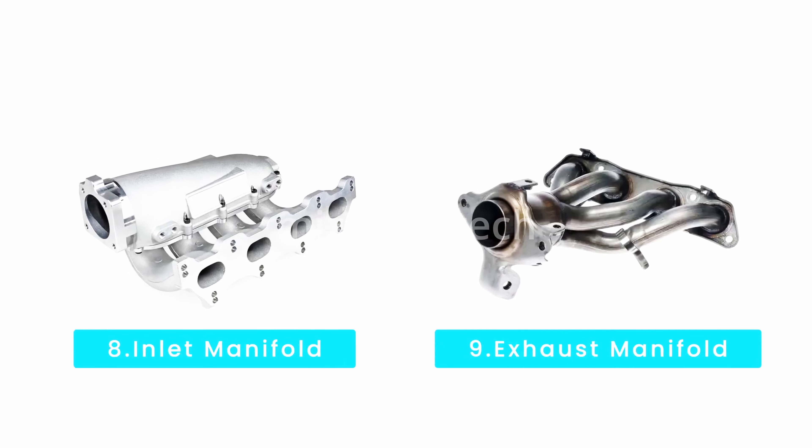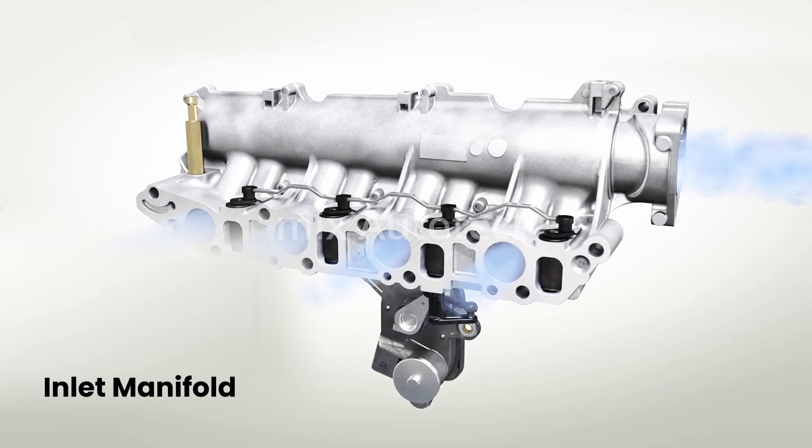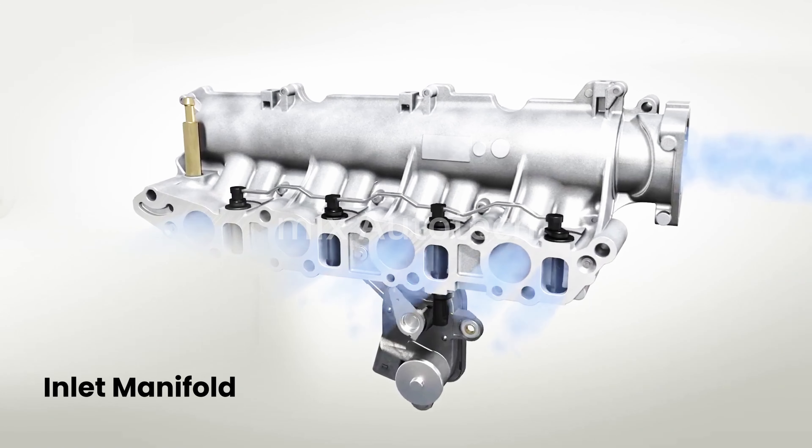Inlet and exhaust manifolds — these components are like the lungs and arteries of the engine, regulating the intake of air and the expulsion of exhaust gases. They are often made from materials that can withstand high temperatures and corrosion, such as cast iron or stainless steel. The inlet manifold is responsible for delivering a mixture of air and fuel to the engine's combustion chambers. The exhaust manifold collects and channels exhaust gases from the engine cylinders to the exhaust system.